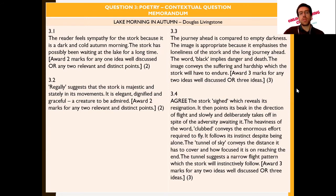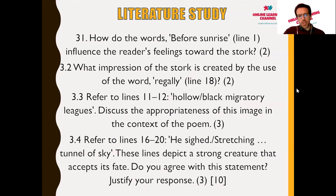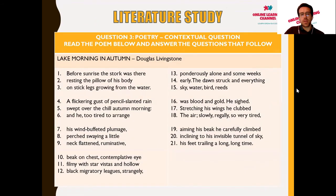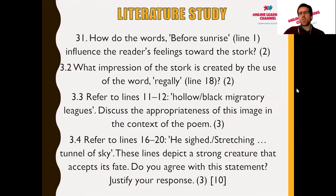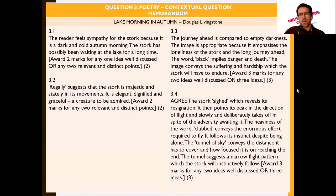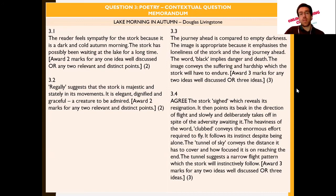Question 3.3 refers to lines 11 and 12 — 'hollow black migratory leagues' — and asks to discuss the appropriateness of this image in the context of the poem. The journey ahead is compared to an empty darkness. The image is appropriate because it emphasizes the loneliness of the stork and the long journey that awaits him. The word 'black' implies danger and death in this context. The image conveys the suffering and hardship the stork will have to endure as a result of its migratory patterns. Three marks are awarded for any two ideas well discussed.